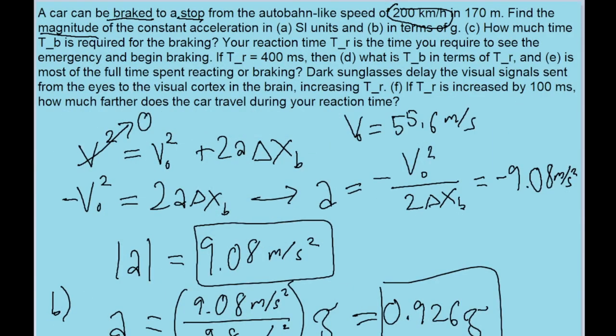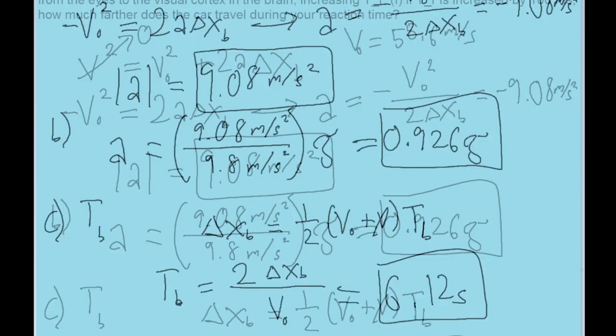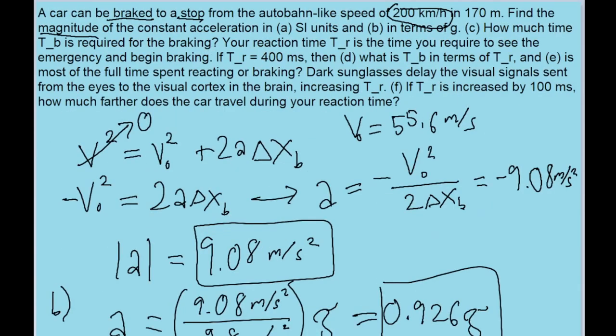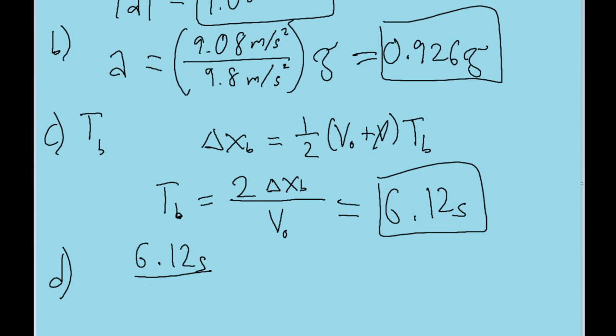Now part D asks us to find the break time in terms of T sub R, the reaction time. Now kind of like part B, this problem is as simple as doing a simple division to get a ratio. So we'll take the time that we just got, 6.12 seconds, and then divide it by the reaction time given to us in the problem, 400 milliseconds. So that's 400 times 10 to the power of negative 3 seconds. And we find a ratio here of about 15.3 times T sub R, the reaction time. So that is our answer to part D.